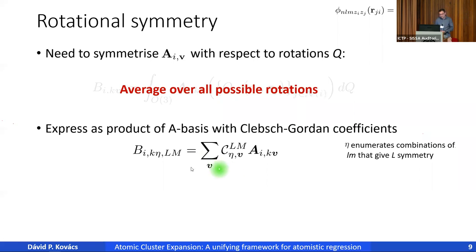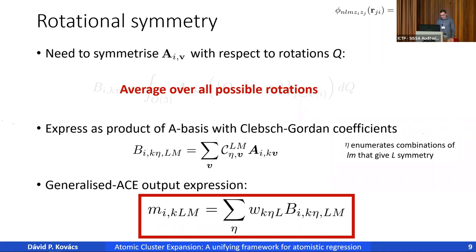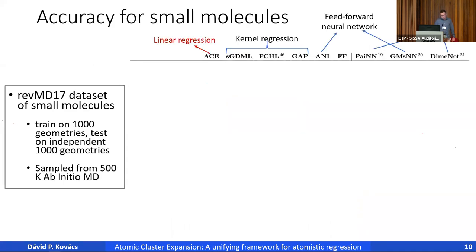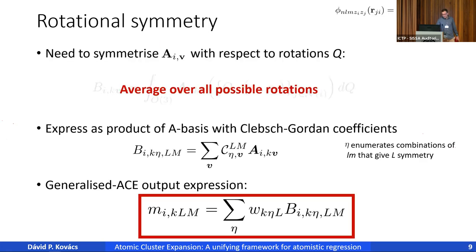Using the appropriate Clebsch-Gordan coefficients, we can create from many-body A-basis functions arbitrarily symmetric many-body functions — a generalized ACE feature. We get an output by taking these features and applying weights. To reduce this to the original Drautz linear ACE, we take k=1 (no uncoupled channel), take the product over everything, and select L=0, M=0 for the invariant energy output.